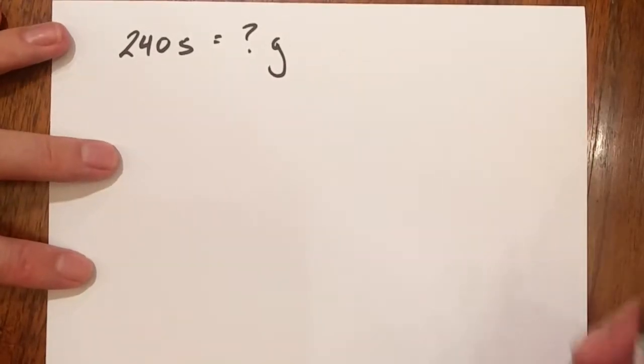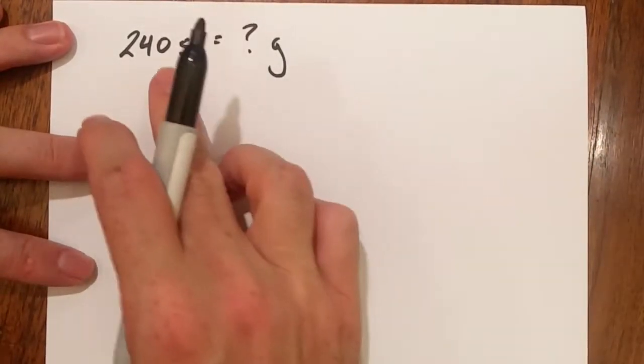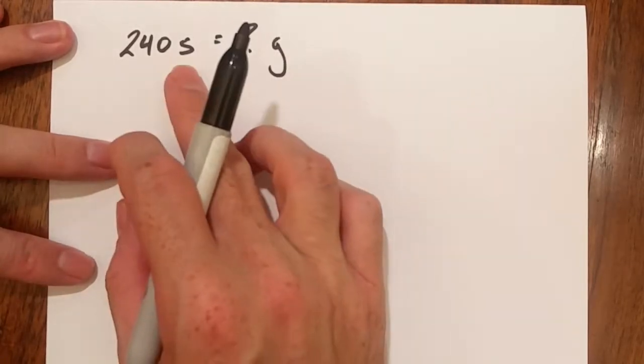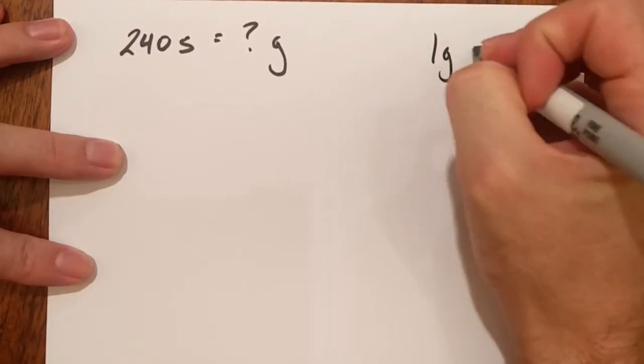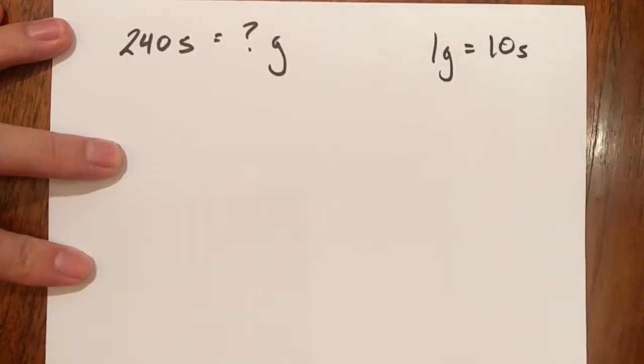Before we can get started what we need to know is the relationship between silver and gold. How many silver is worth one gold? What is that ratio? Well I do know that one gold is the same as ten silver.